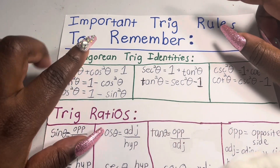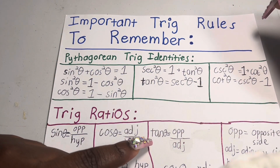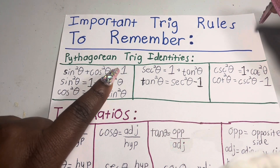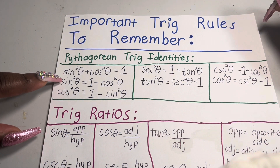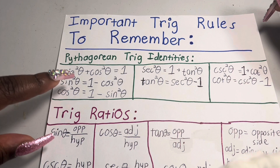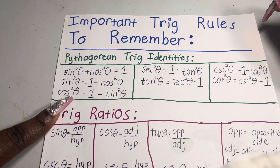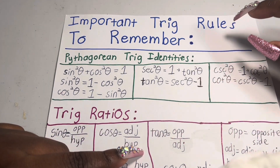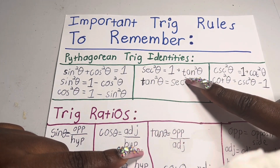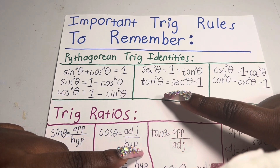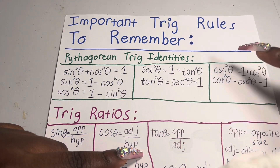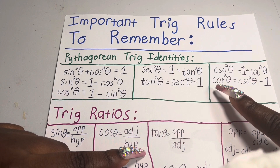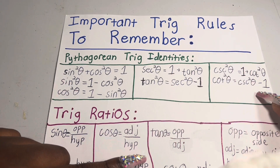Here are some important trig rules to remember — you might want to write all of these down. Starting with the Pythagorean trig identities: sin²θ + cos²θ = 1, which gives us sin²θ = 1−cos²θ and cos²θ = 1−sin²θ. For tan and secant: sec²θ = 1+tan²θ, and tan²θ = sec²θ−1. For cosecant and cotangent: csc²θ = 1+cot²θ, and cot²θ = csc²θ−1.